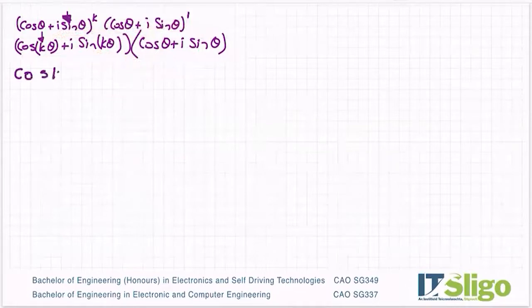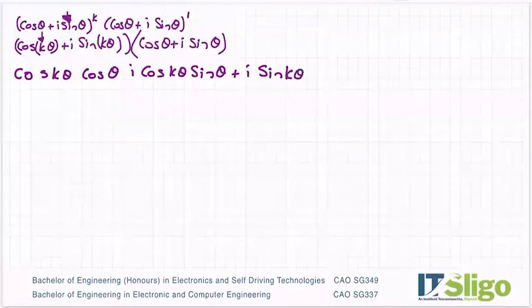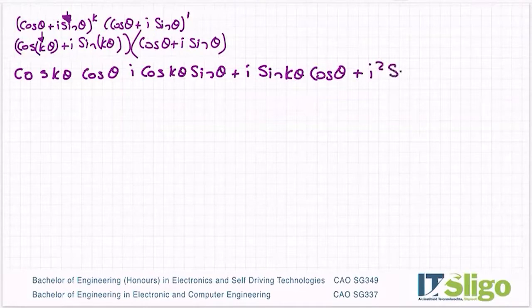So I'll end up with getting cos k theta by cos theta plus i cos k theta sine theta. That's that by those two. Now I'm coming back for these two. Plus i sine k theta cos theta plus i squared sine k theta sine theta.